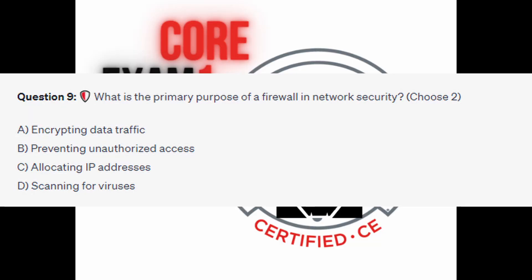Question 9. What is the primary purpose of a firewall in network security? Choose two. Is it A, encrypting data traffic? Is it B, preventing unauthorized access? Is it C, allocating IP addresses? Or is it D, scanning for viruses?